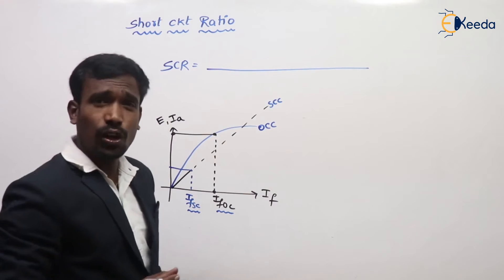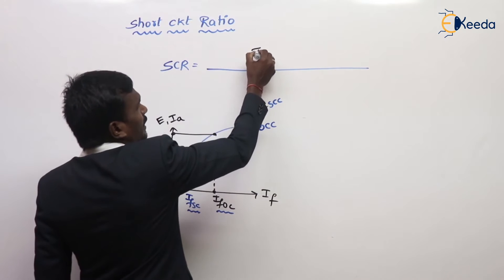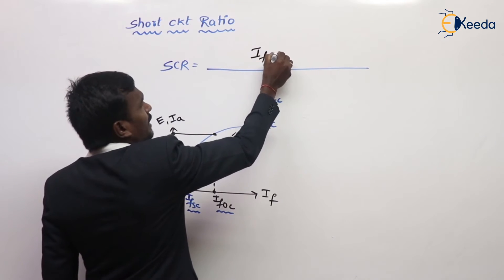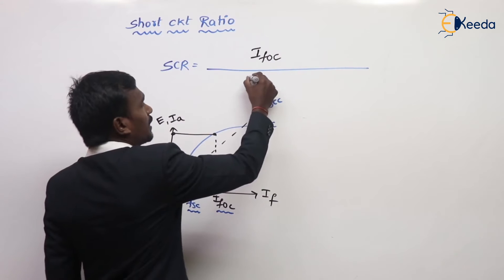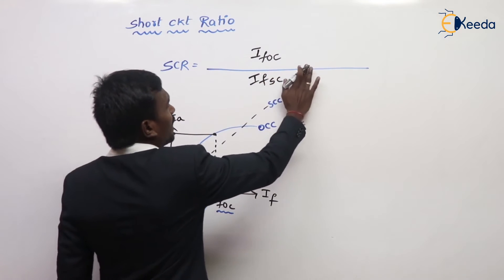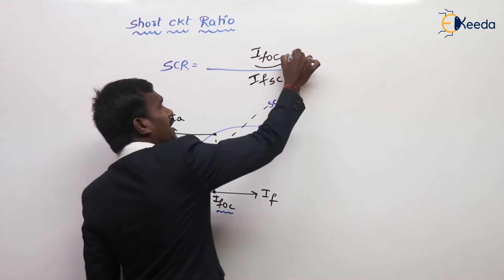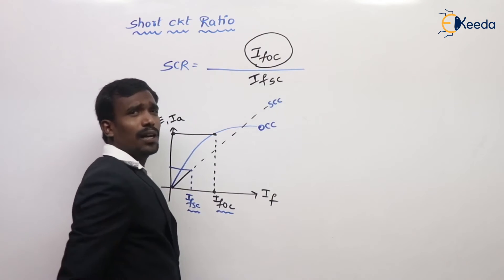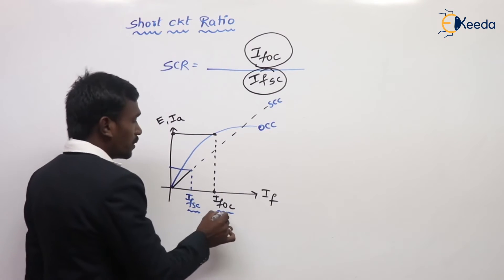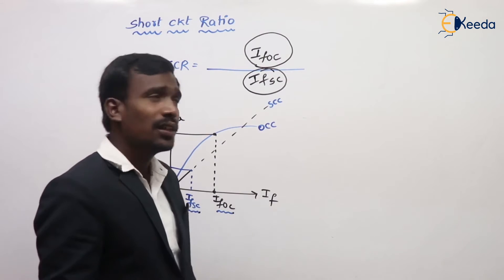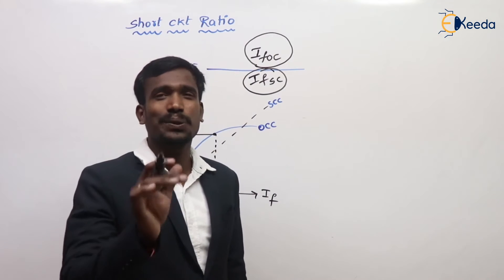So what is short-circuit ratio? Short-circuit ratio is the field current required to produce rated voltage on open-circuited armature, divided by the field current required to produce rated current on short-circuited armature — simply IFOC upon IFSC. This is our short-circuit ratio.